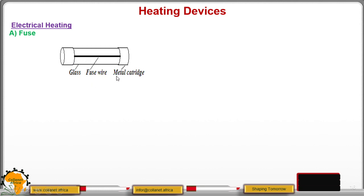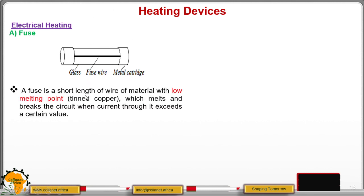Now, a fuse has the fuse wire. And this fuse wire has to be of low melting point. Then we have the metal cartridge and the glass that is covering. Now, a fuse is a short length of wire of material with low melting point. In other words, we can use what we call the tinned copper. It has low melting point so that it can melt. And by melting, it breaks the circuit.